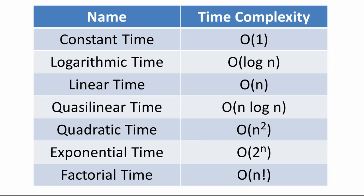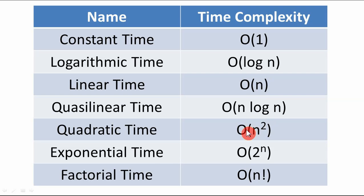Compare linear and quadratic time complexity: if n increases from 2 to 3, in linear time the operations go from 2 to 3 — an increment of 1. But in quadratic time, operations go from 2²=4 to 3²=9 — an increment of 5. In linear time, operations increment by 1 each time, but in quadratic time, operations increment by the square of n each time.